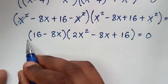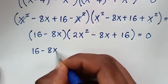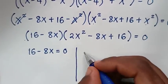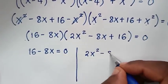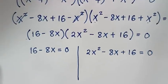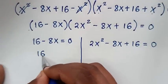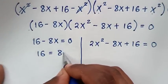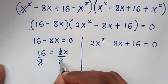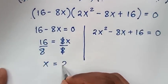We have two solutions. The first solution: 16 minus 8x equals 0. Taking negative 8x to the right side gives 16 equals 8x. Dividing both sides by 8, x equals 16 divided by 8, which is 2. This is the first answer, the real solution.